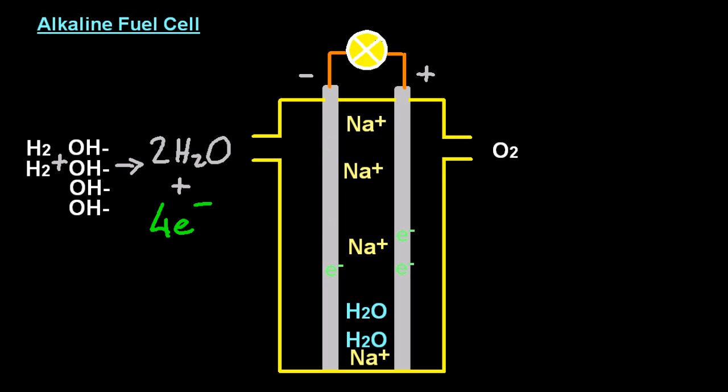Electrons produced at the negative electrode, the anode, in voltaic cells. It's the opposite for electrolytic cells. Banks physics.